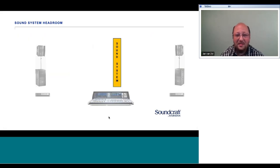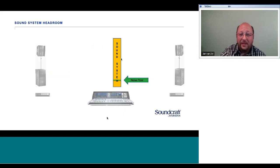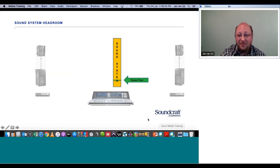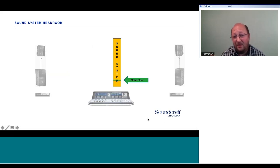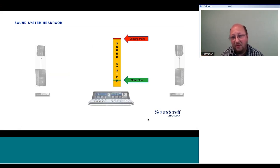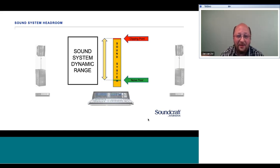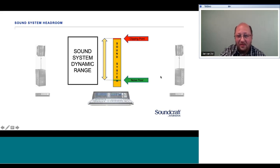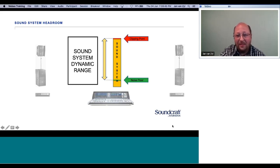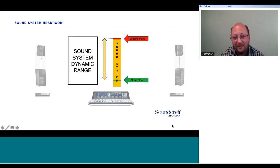The sound system has a noise floor — a small amount of electronic noise from all components combined. We need to make sure the softest part of the audio is louder than the noise floor, otherwise it will be masked. The system also has an upper limit, the clipping point. The difference between the noise floor and the clipping point is the sound system dynamic range.